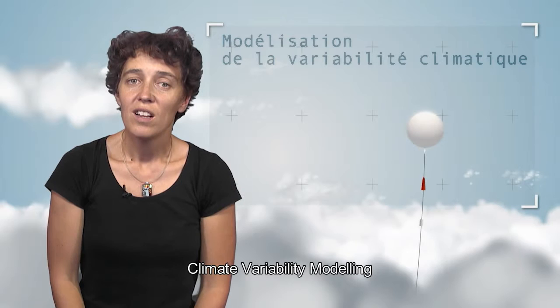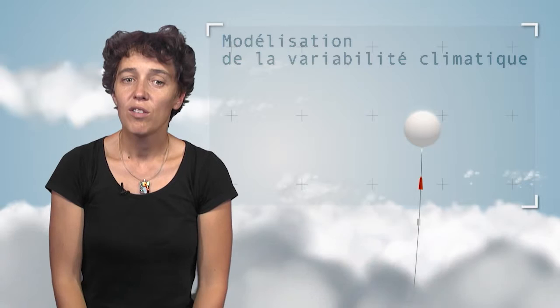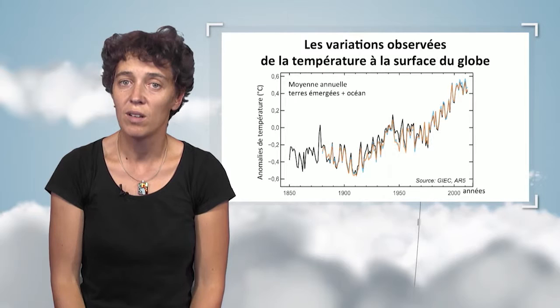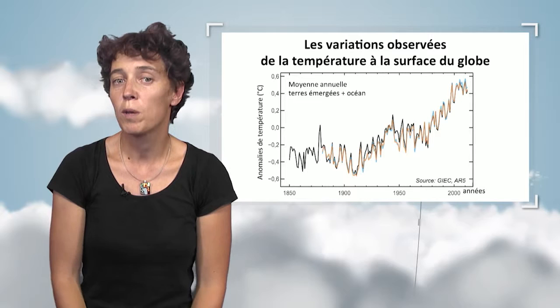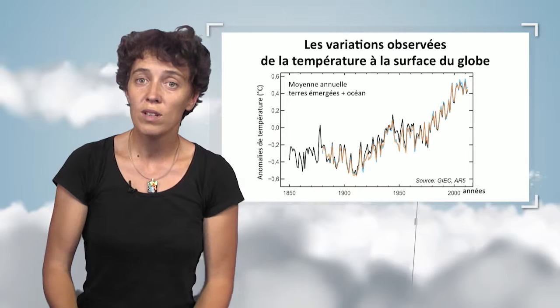We're going to talk about modeling of climatic variability. But first, why do we talk about climatic variability? Let us look at the observed variations — how temperature has changed on the Earth's surface during the last 150 years. Obviously, there is a trend towards global warming, and researchers explain that with the increased concentration of greenhouse effect gases in the atmosphere. But there are also variations from one year to the next or one decade to the next.